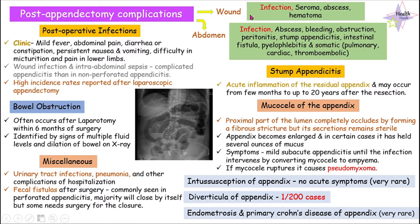Before that, I'd like to tell you what the other complications are present in both. Under wound complications it includes seromas, abscesses, and hematomas. In case of abdomen complications it includes abscess, bleeding, obstruction, peritonitis, stump appendicitis, intestinal fistulas, pylephlebitis, and also other somatic complications.